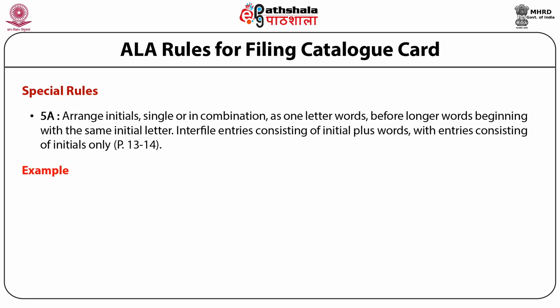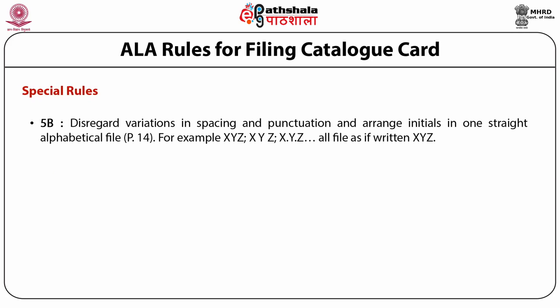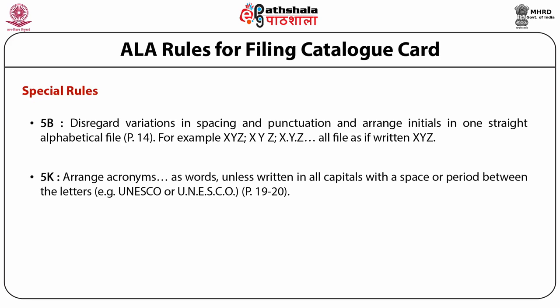Examples of Rule 5a: A., A.A., A.A. Foundation for Traffic Safety, A.B., A.A. views and architectures. Rule 5b: disregard variations in spacing and punctuation and arrange the initials in one straight alphabetical file; for example, XYZ, X Y Z, and X.Y.Z. all file as if written as XYZ. Rule 5k: arrange acronyms as words unless written in all capitals with a space or period between the letters; for example, UNESCO or U.N.E.S.C.O.